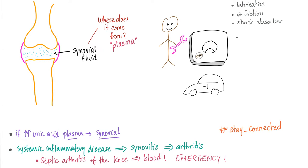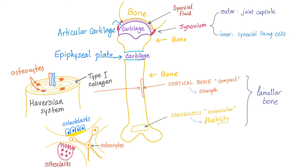Septic arthritis of the knee can lead to the spread of infection into your blood. That's why septic arthritis is an emergency. In my second video in the rheumatology playlist called 'Rheumatology Learning the Basics,' we talked about the anatomy of the bone and joint. Here we have the articular cartilage, the bone, the synovium, the synovial fluid. The outer layer is the joint capsule and the inner is the synovial lining cells.